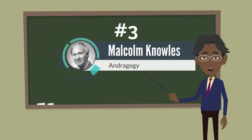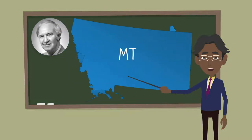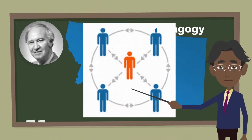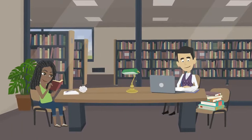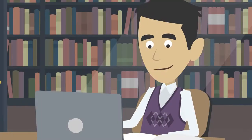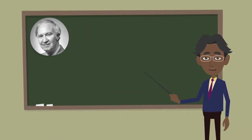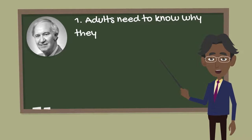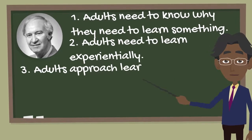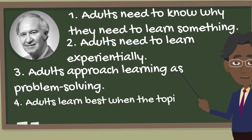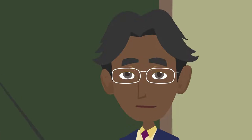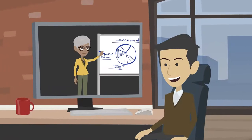Number three: Malcolm Knowles. Malcolm Knowles was born in Livingston, Montana in 1913. He was the author of the learning theory known as andragogy. Andragogy emphasizes that adults are self-directed and expect to take responsibility for decisions; consequently, adult learning programs must accommodate this fundamental aspect. Andragogy makes the following assumptions about the design of learning: one, adults need to know why they need to learn something; two, adults need to learn experientially; three, adults approach learning as problem solving; and four, adults learn best when the topic is of immediate value. In practical terms, andragogy means that instruction for adults needs to focus more on the process and less on the content being taught.